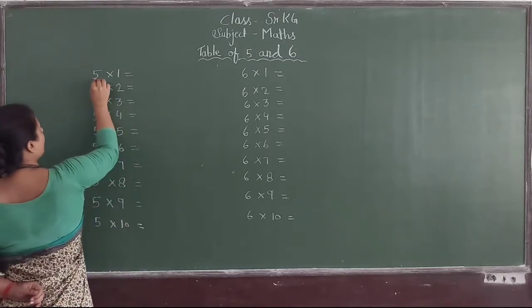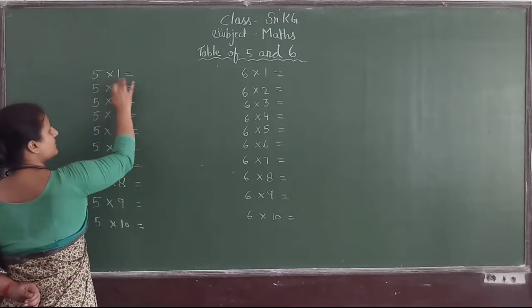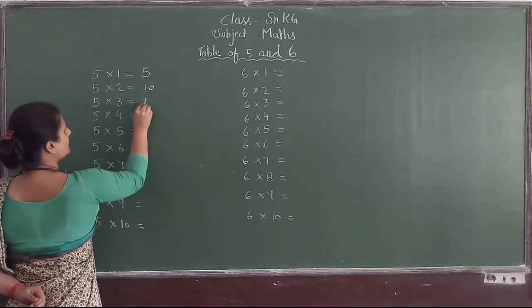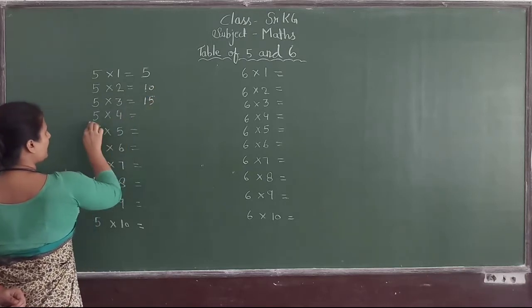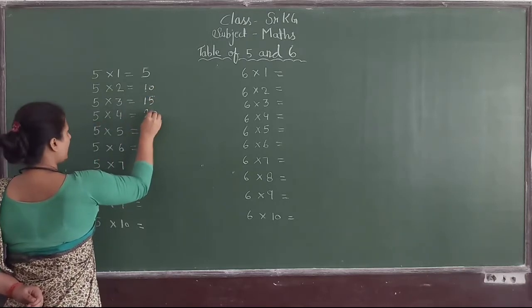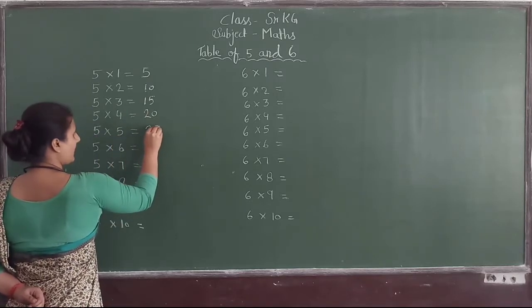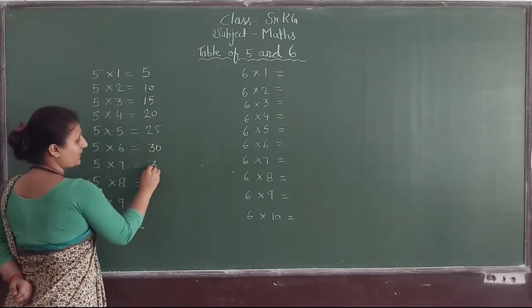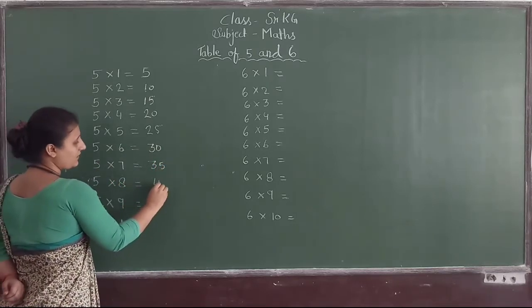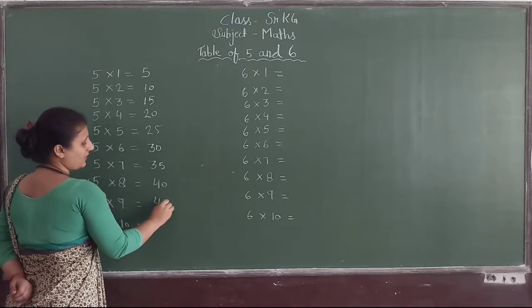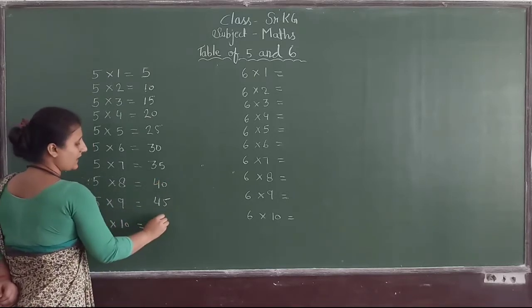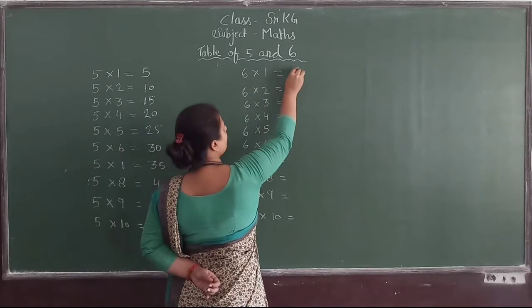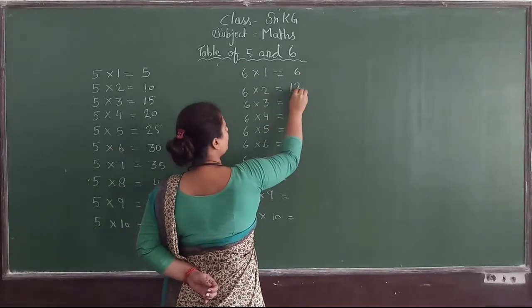5×1=5, 5×2=10, 5×3=15, 5×4=20, 5×5=25, 5×6=30, 5×7=35, 5×8=40, 5×9=45, 5×10=50. And 6: 6×1=6, 6×2=12.